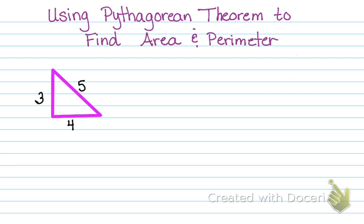So this is a right triangle, sides 3, 4, 5. That's one of those special ones we know that work.